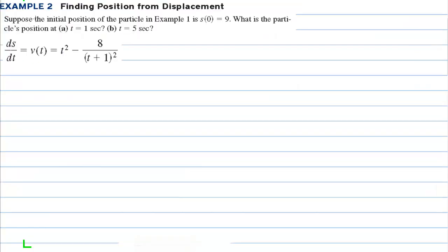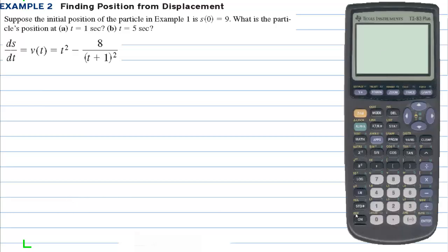In example 2, suppose the initial position of the particle in example 1 is s(0) = 9. What is the particle's position at t = 1 second and t = 5 seconds? Well, we're going to use our calculator to do that.